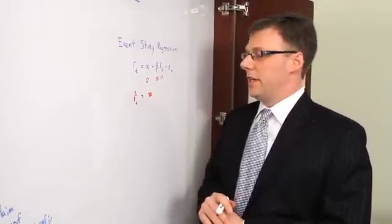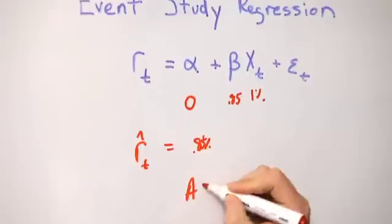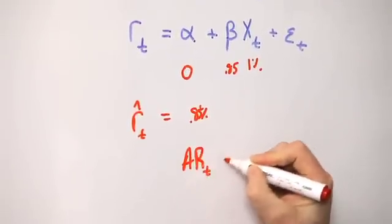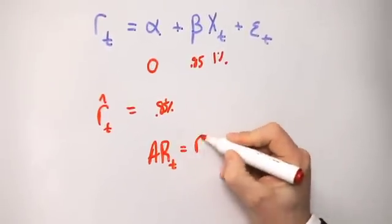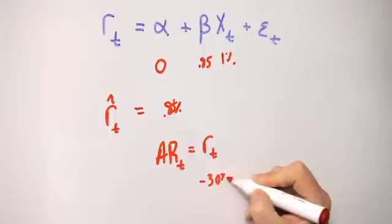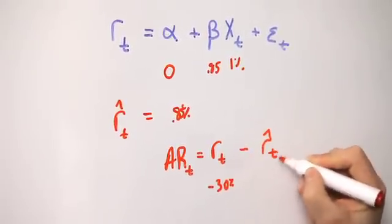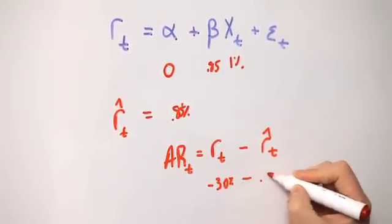What we then ask is how did the actual return differ from this predicted return. So we calculate what's known as an abnormal return on day t which is just the actual return at time t in this case minus 30 percent minus the predicted return on day t which in this case is 0.85 percent.